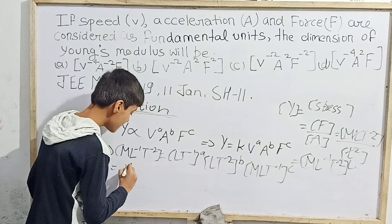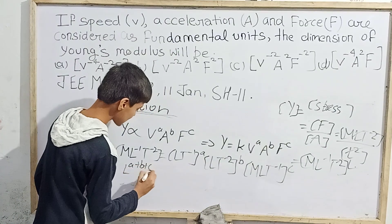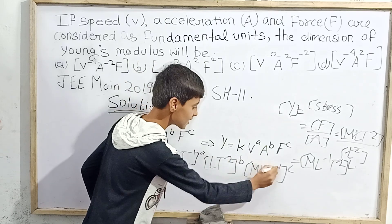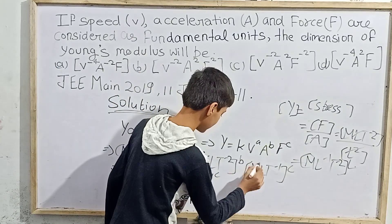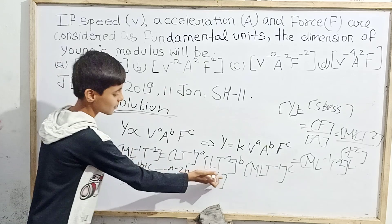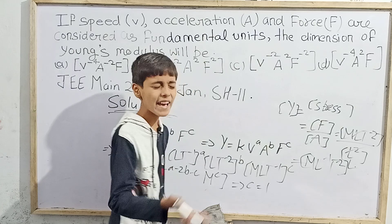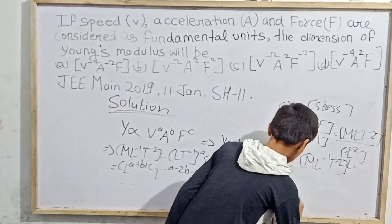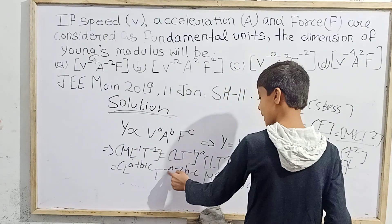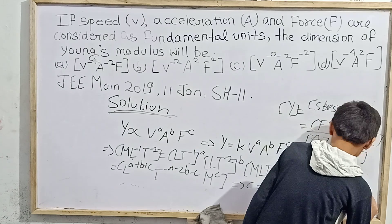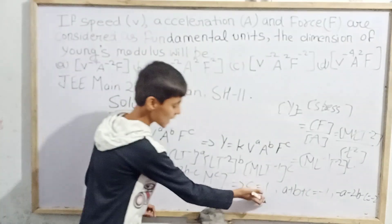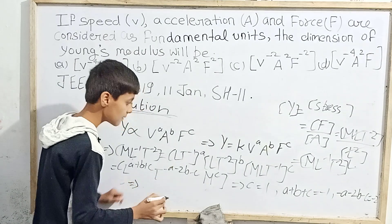Expanding and comparing dimensions: for L, we get L^(a+b+c) = L⁻¹, so a + b + c = −1. For T, we get T^(−a − 2b − c) = T⁻², so −a − 2b − c = −2. For M, we get M^c = M¹, so c = 1. We now have three equations to solve for a, b, and c.